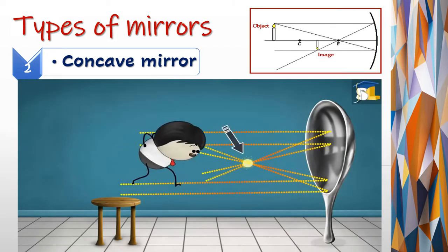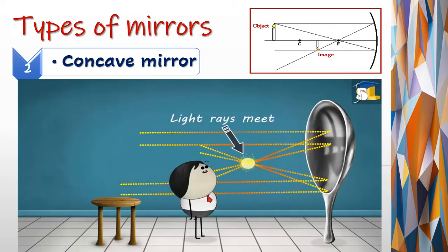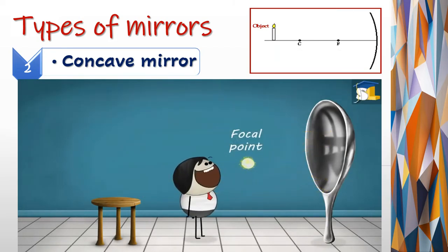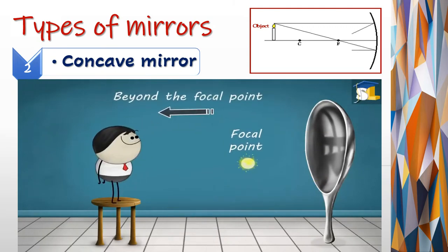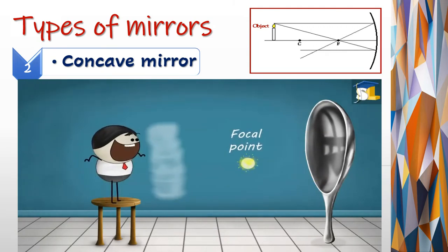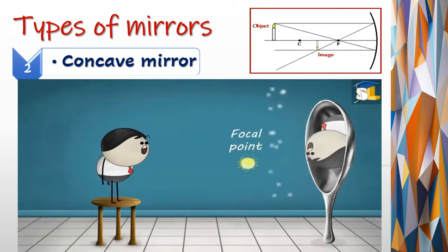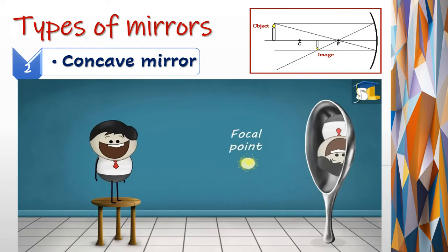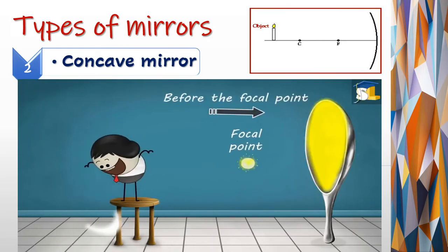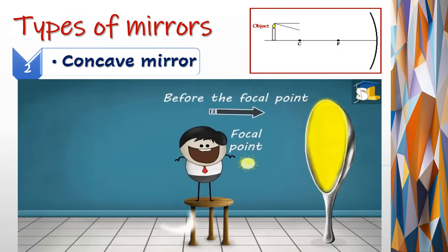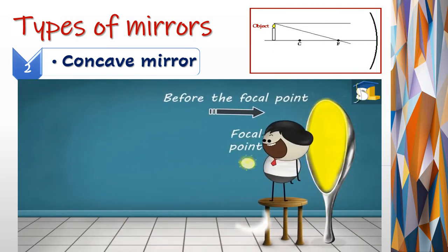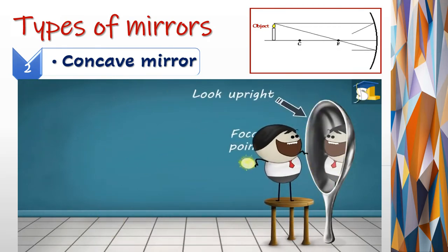The point where all these light rays meet is called the focal point. When you stand beyond this point, you will see an inverted image of yourself. However, if you stand before the focal point, the image will look upright.